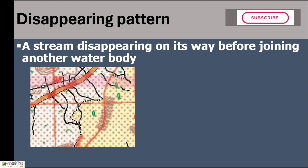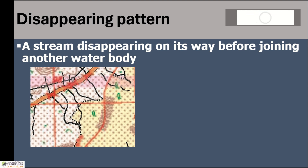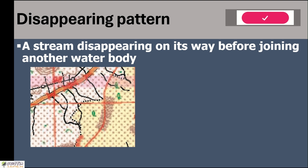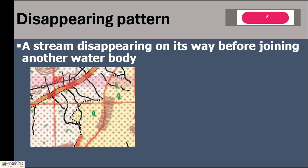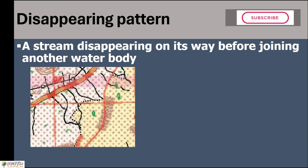Our study area is in Kutch and Rajasthan. Both are dry areas, areas of sandy soil and very high temperature, and rainfall is scanty. In such areas, these kind of streams are pretty common. They are dry streams — they get water only during rainy season, and the soil is sandy in nature. So before they can reach too far, they disappear. These kind of streams are the disappearing streams.